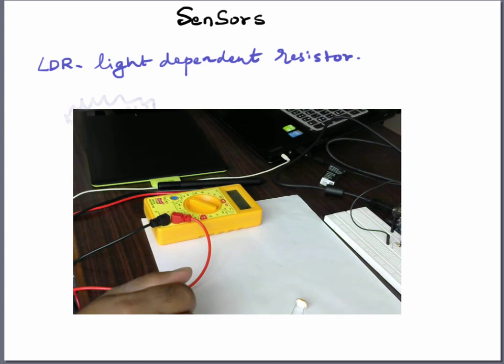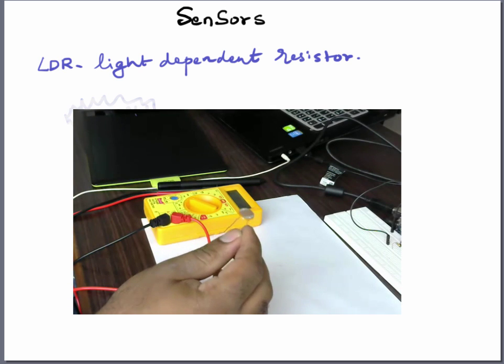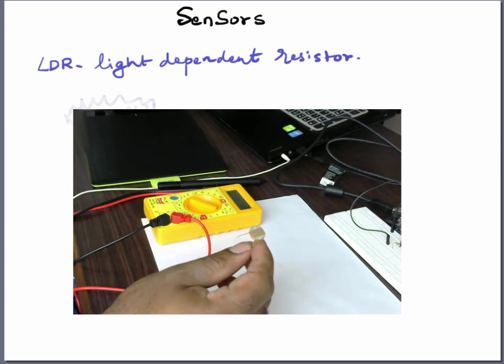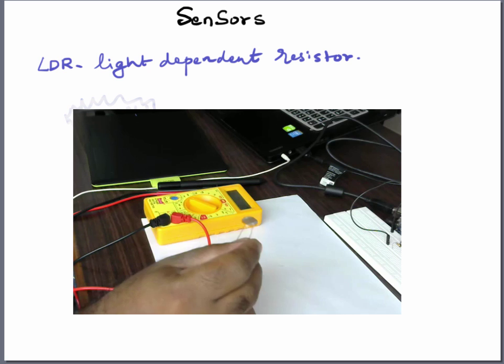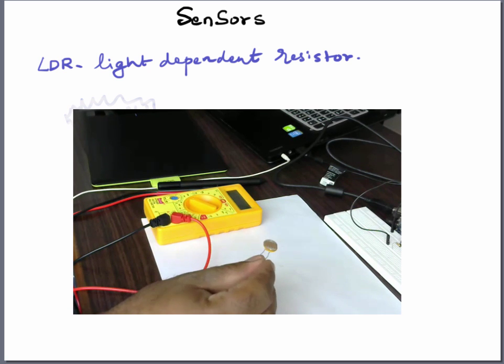Hello there, in this video we're going to talk about LDR or light dependent resistor. Basically this component, or you want to call it a sensor, is used to detect the light in any specific area.